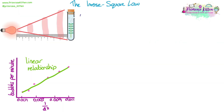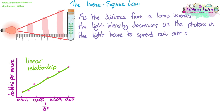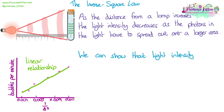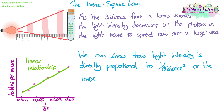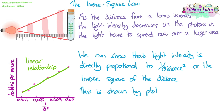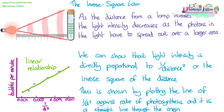We need to be able to demonstrate the inverse square law. As the distance from a lamp increases, the light intensity decreases as the photons in the light have to spread out over a larger area, so there is less light energy overall hitting the plant. In the practical, we are moving the distance of the lamp, and we can show that light intensity is directly proportional to 1 divided by the distance squared — the inverse square of the distance. If we plot 1 over the distance squared against the rate of photosynthesis, you can see it's a straight line that goes through the origin, which shows it is directly proportional.